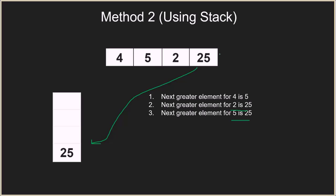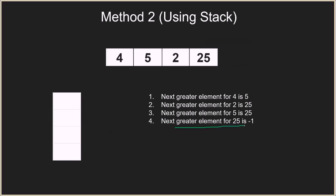We are now done with step two. There are no more elements in the array, so for the remaining element in the stack, we print that the next greater element is minus 1. For 25, we print that its next greater element is minus 1. With that the example is clear, so let's proceed to the code.